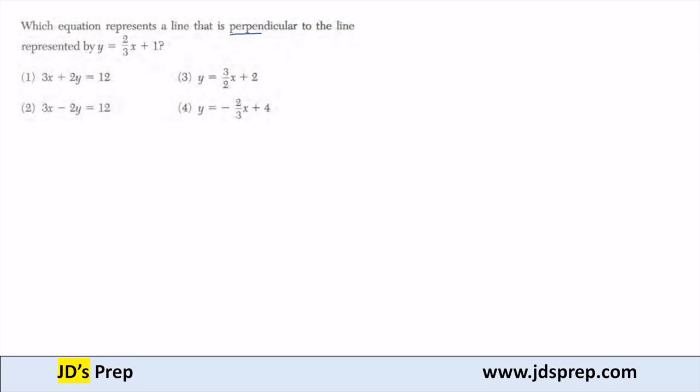So the first thing to remember is that when you're trying to find a perpendicular line, the slope of a line and a perpendicular line are opposite reciprocals.